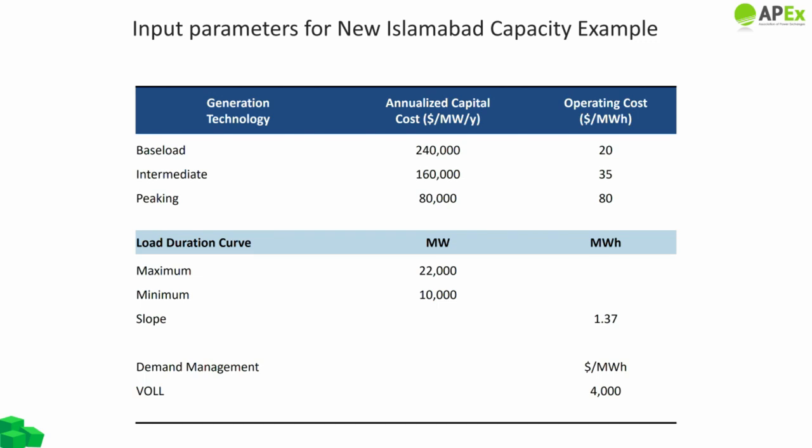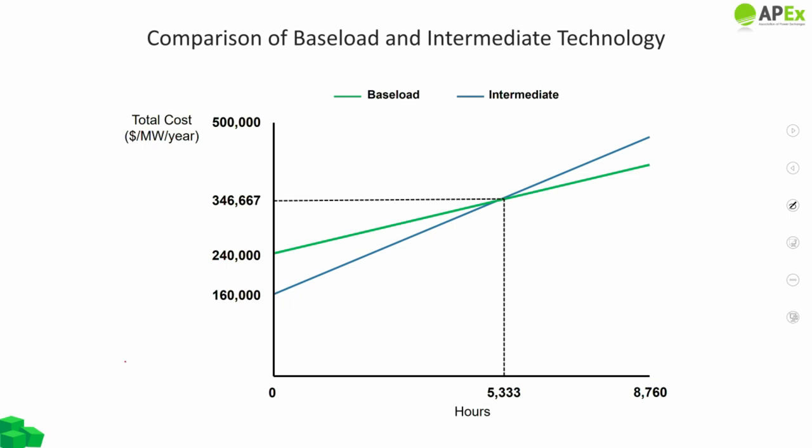The problem statement is: what are the capacity factor cutoff values for different technology types — broadly classified as baseload, intermediate, and peaker — and what are the choices of capacity to install to meet a given load? The table on screen gives data for a hypothetical new Islamabad system showing cost parameters for three dispatchable generation technologies together with parameters for a linear load duration curve. Using cost parameters for baseload and intermediate technologies, the graphs on screen show the total cost per megawatt of installed capacity as a function of the number of hours that megawatt of capacity is used to generate power.